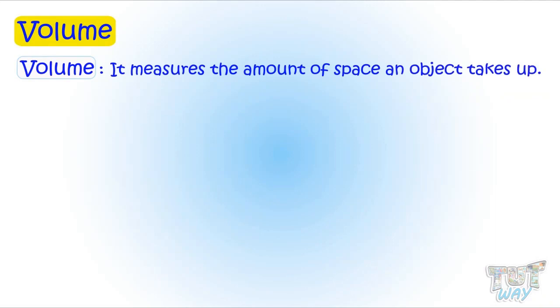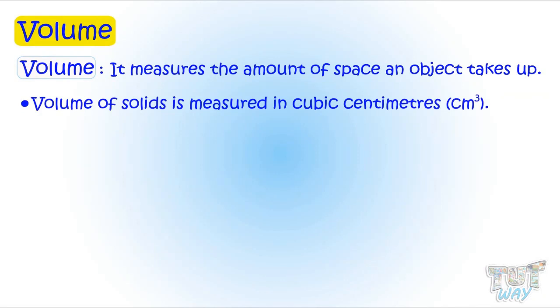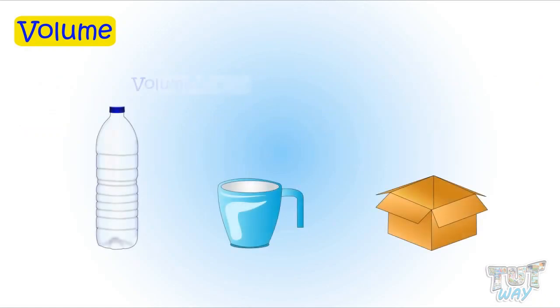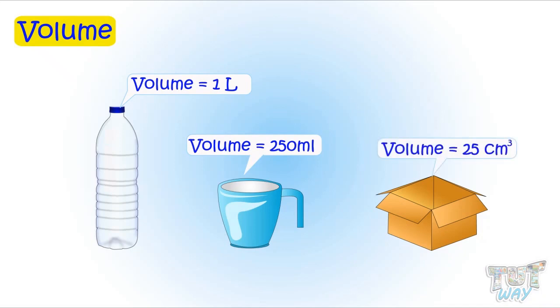Now let's learn another property, and it is volume. Volume measures the amount of space an object takes up, and it is measured in cubic centimeters in case of solids and liters in case of liquids. For example, volume of this bottle is 1 liter. Volume of this mug is 250 milliliters. Volume of this box is 25 cubic centimeters.